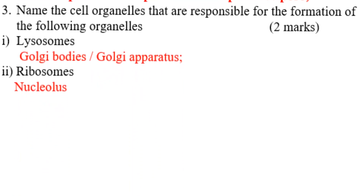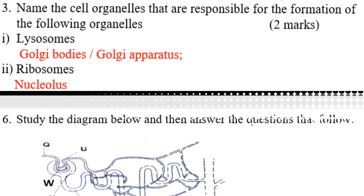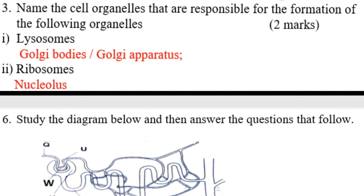Name the cell organelles responsible for the formation of the following: lysosomes — that is Golgi bodies or Golgi apparatus; ribosomes — that is the nucleus.